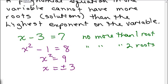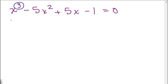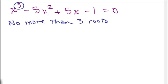It gets a little trickier with something to the third power. For example, X cubed minus 5X squared plus 5X minus 1 equals 0 is more difficult to solve unless we can factor it. If I could factor it, I could set each factor equal to 0. What we do notice is the highest exponent is 3, so there are no more than 3 solutions — no more than 3 roots.